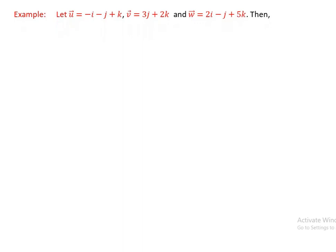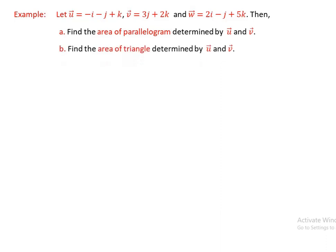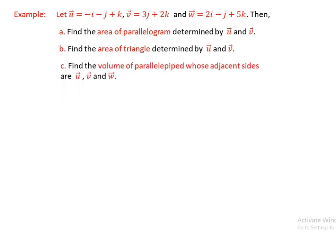Let the vectors u equal negative i minus j plus k, and v equal 3j plus 2k, and w equal 2i minus j plus 5k. Find: (a) the area of the parallelogram determined by u and v, (b) the area of the triangle determined by u and v, and (c) the volume of the parallelepiped whose sides are u, v, and w.